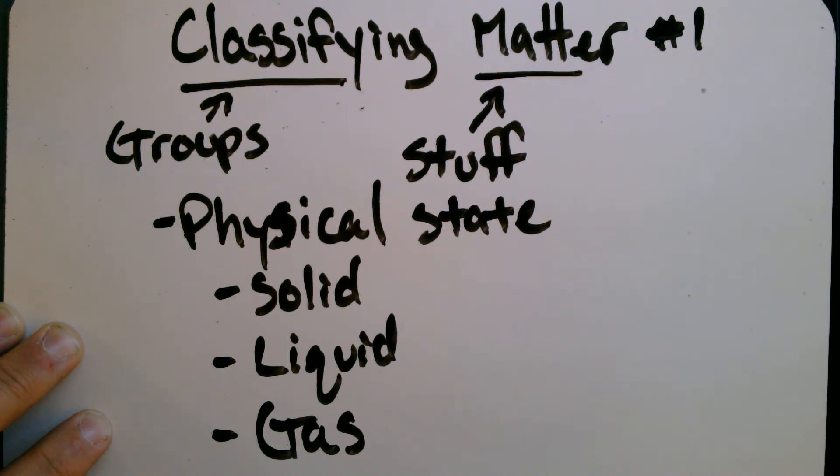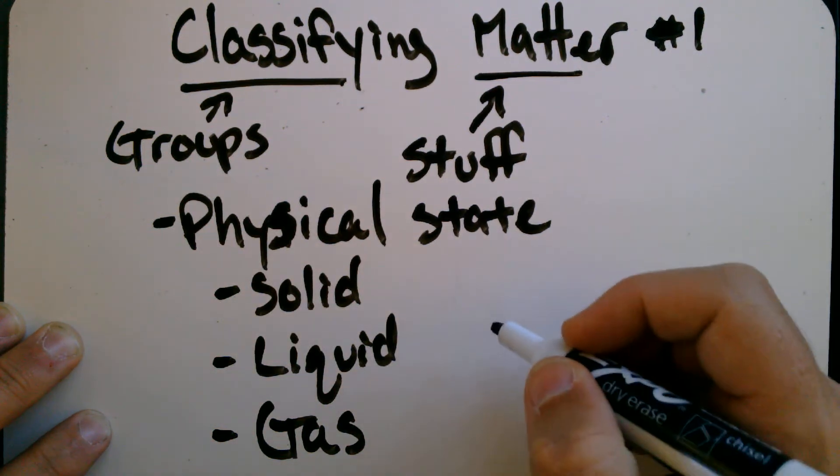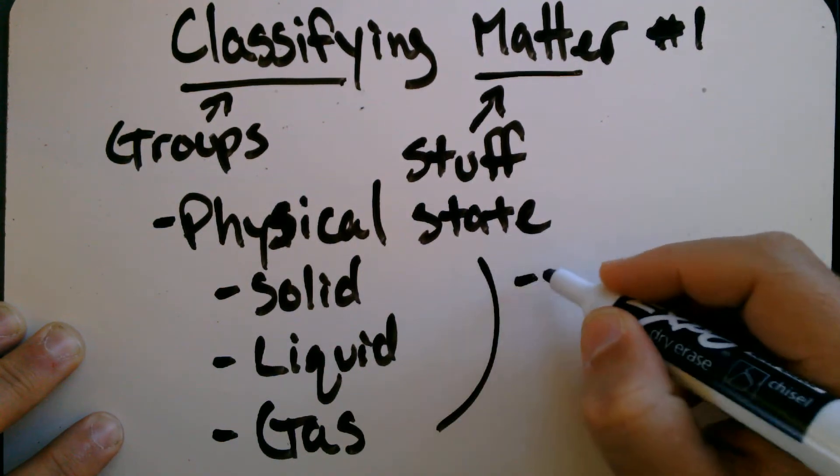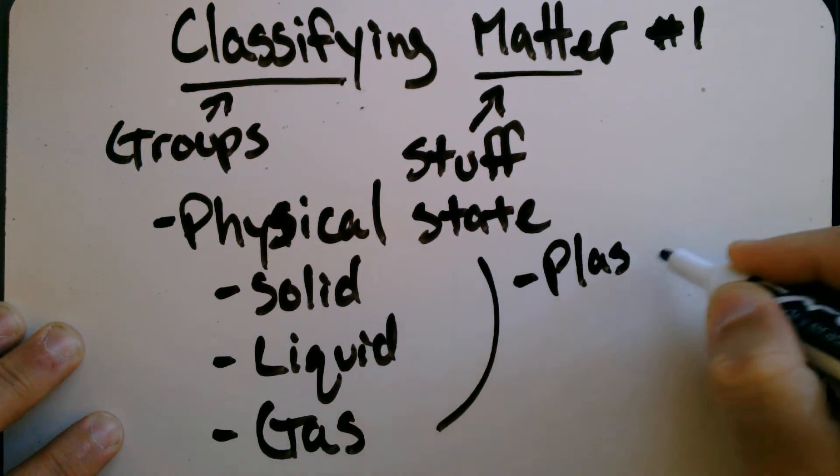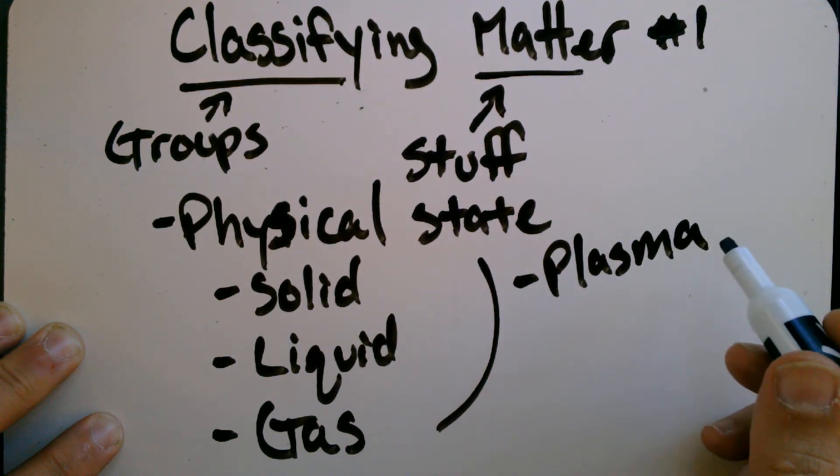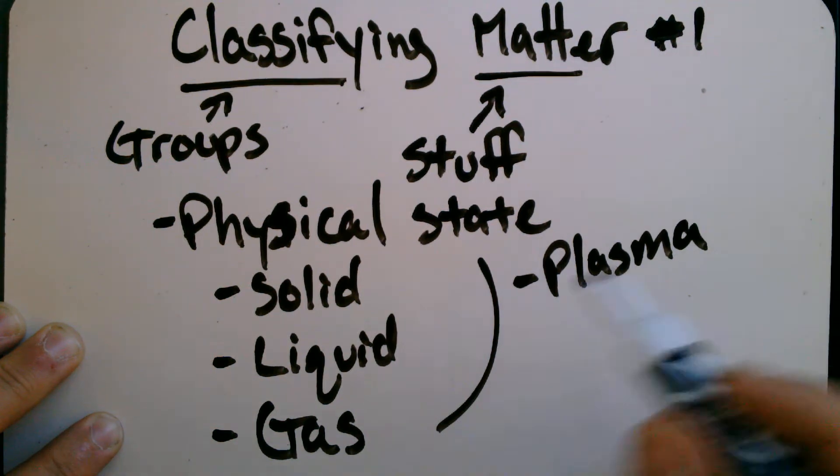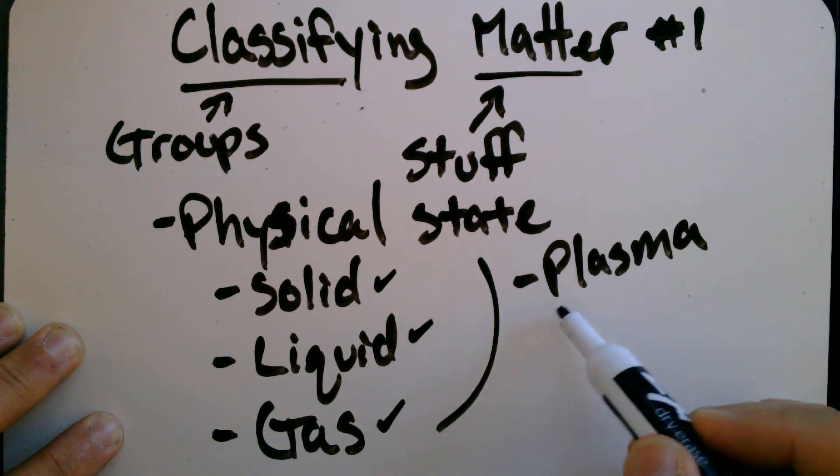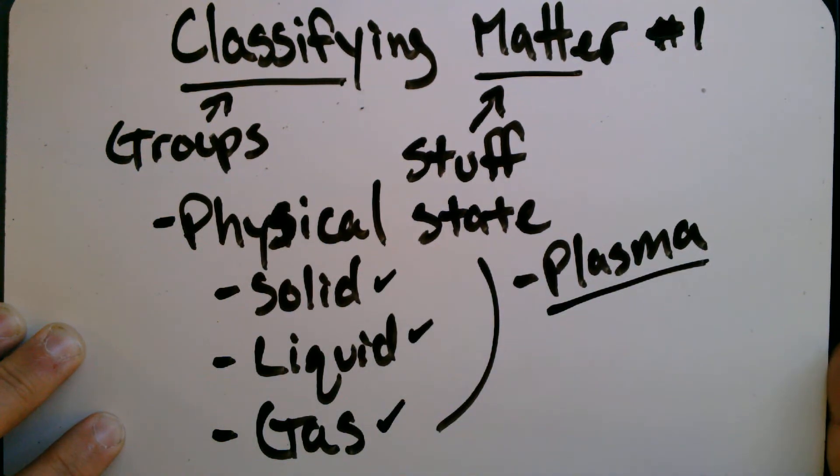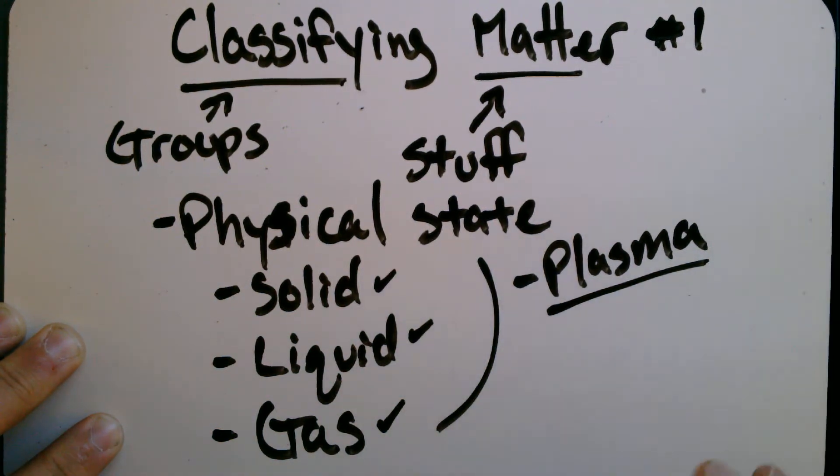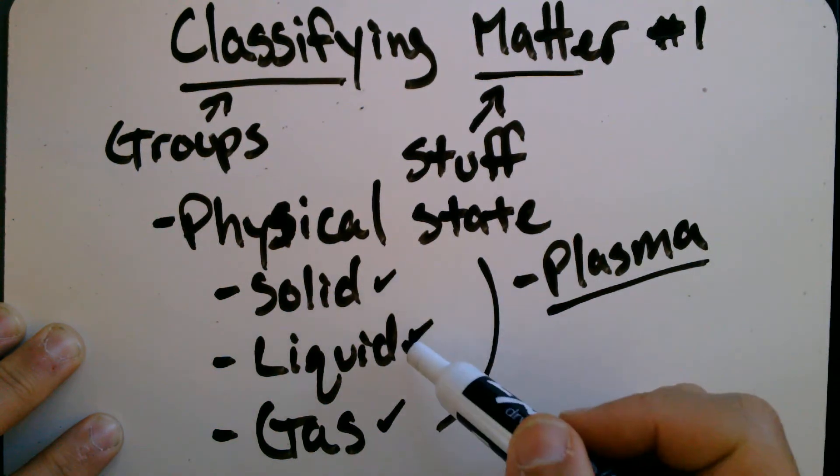Now, if you were in my homeroom class, we talked about a fourth physical state called plasma. You do not need to know about plasma right now. That was just something fun that we did. For right now, all you need to know is solid, liquid, gas. If you're not sure what plasma is, but you're interested, come talk to me. It's really cool. And if you're not worried about it, don't worry about it, because you don't need to know plasma right now. All you need to know is solid, liquid, gas.